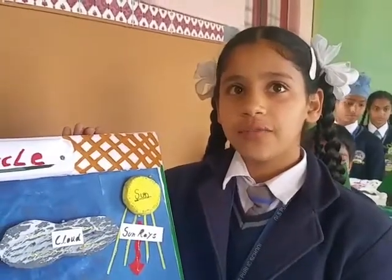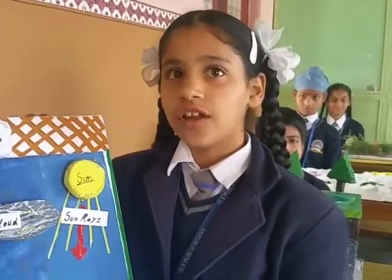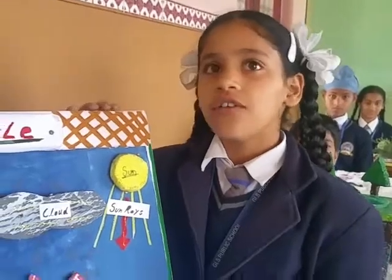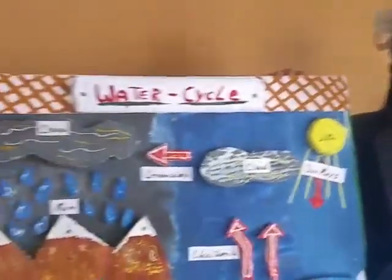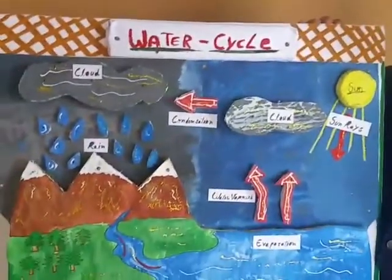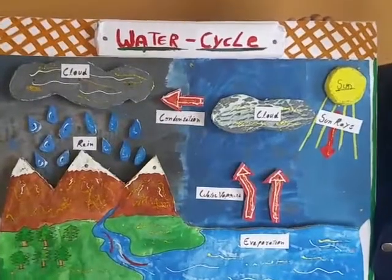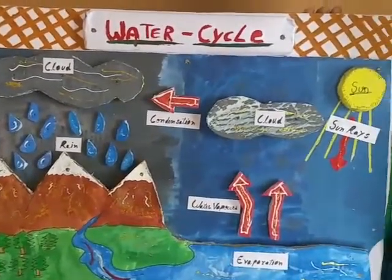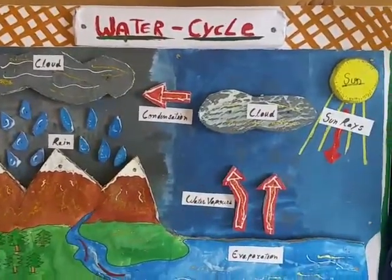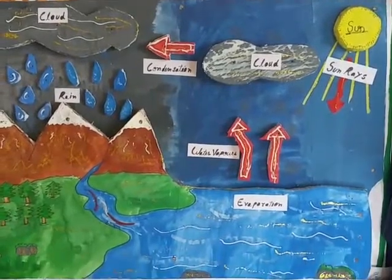Good morning to all of you. My name is Sanjay Biko and I am a student of class 4th. My project work is the water cycle. In nature, water is found in 3 states: solid, liquid, and gas. The ground water is heated by the sun and changes into water vapor.